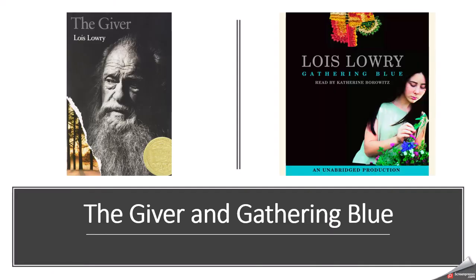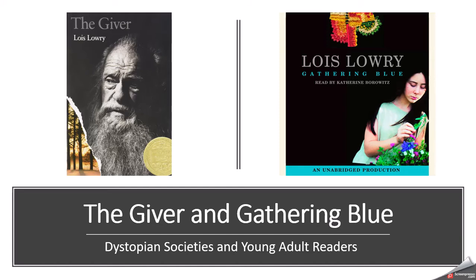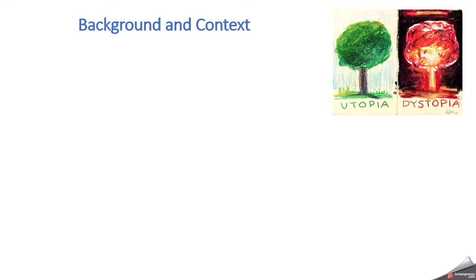Hi everyone. Today we are going to look at The Giver and Gathering Blue, two books for our young adult literature unit. As with the other books, we're going to be talking about some of the features of these novels as well as how they meet the developmental needs of readers. We'll also be looking at dystopian and utopian fiction and talking about what that is about.